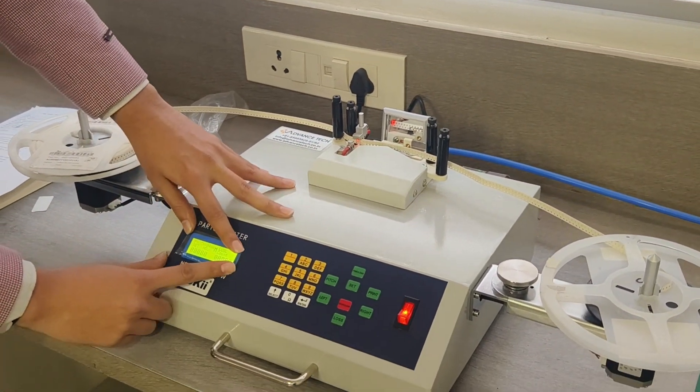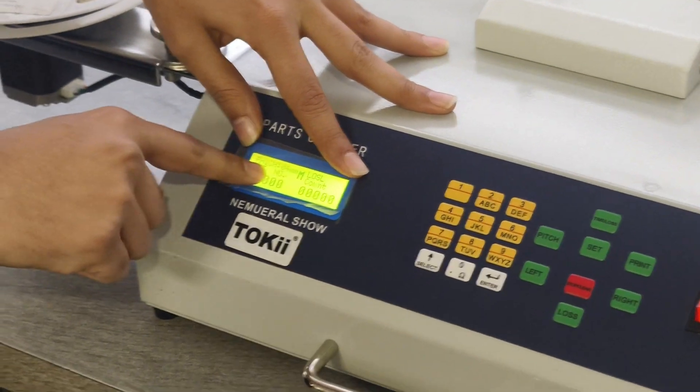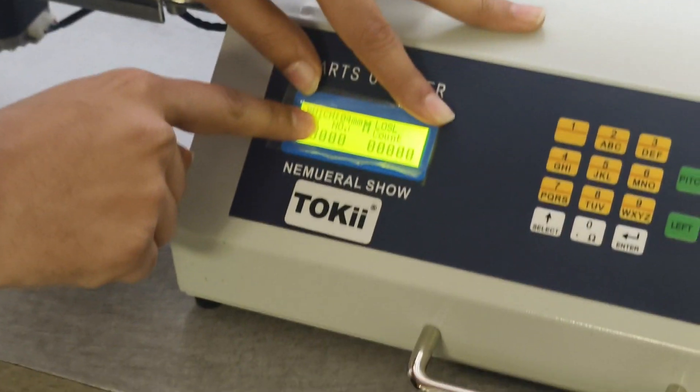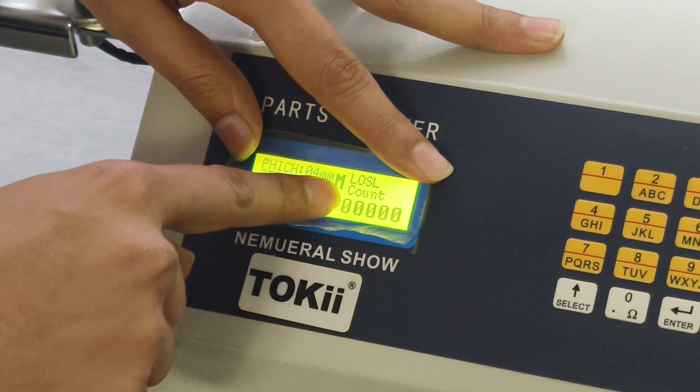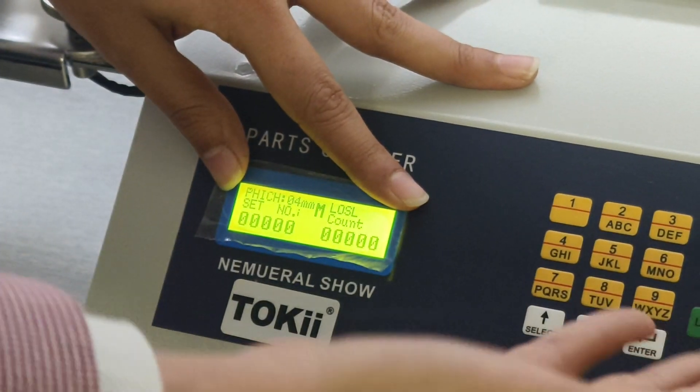And we have a display here. On the display you have various things over here like pitch, then you have the mode, manual and automatic mode. Manual mode means you can start and stop manually.